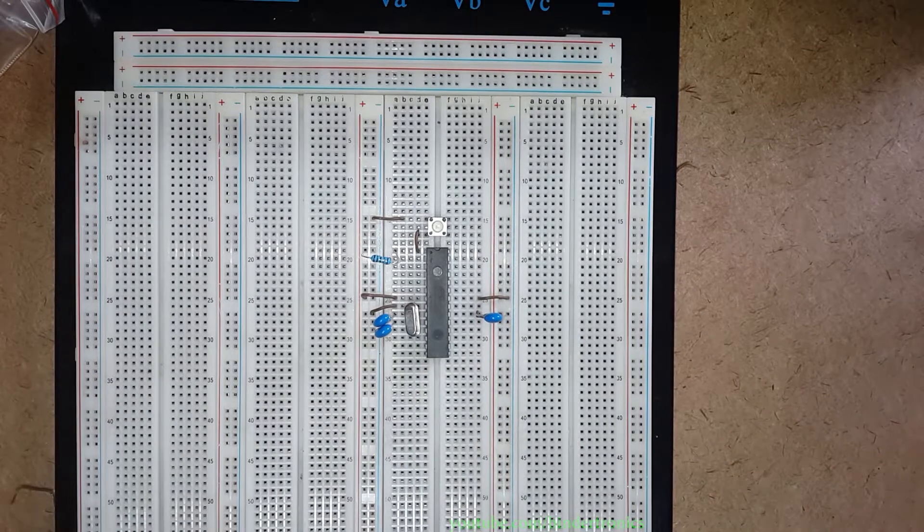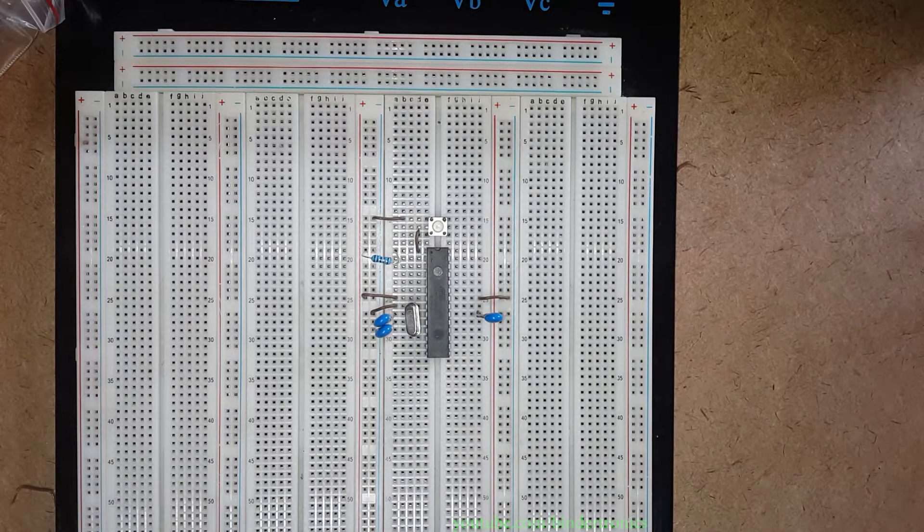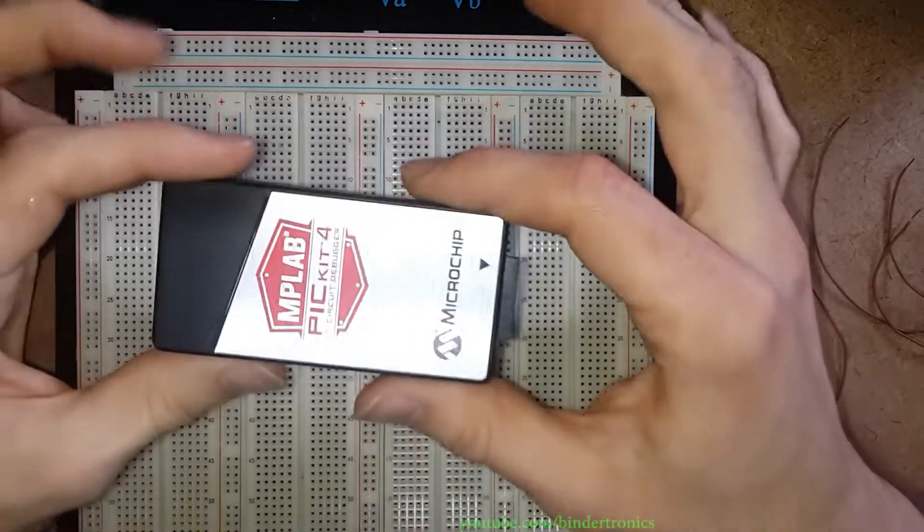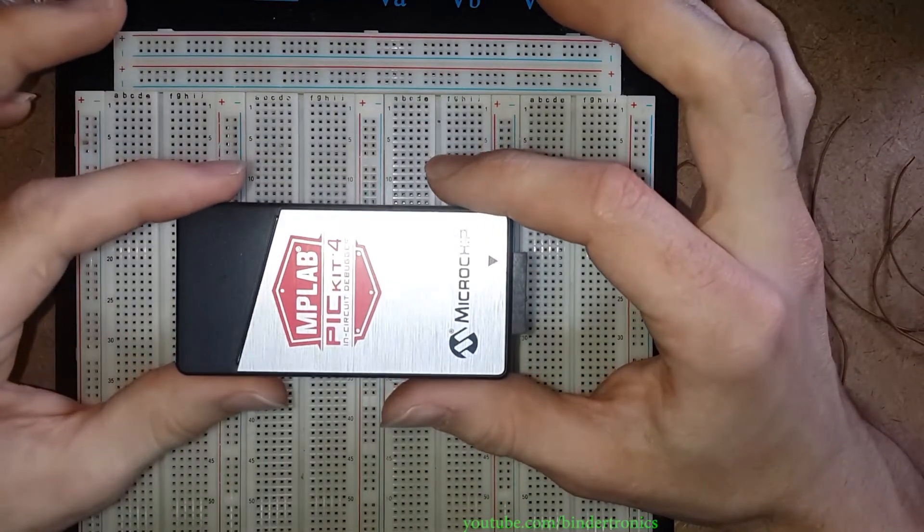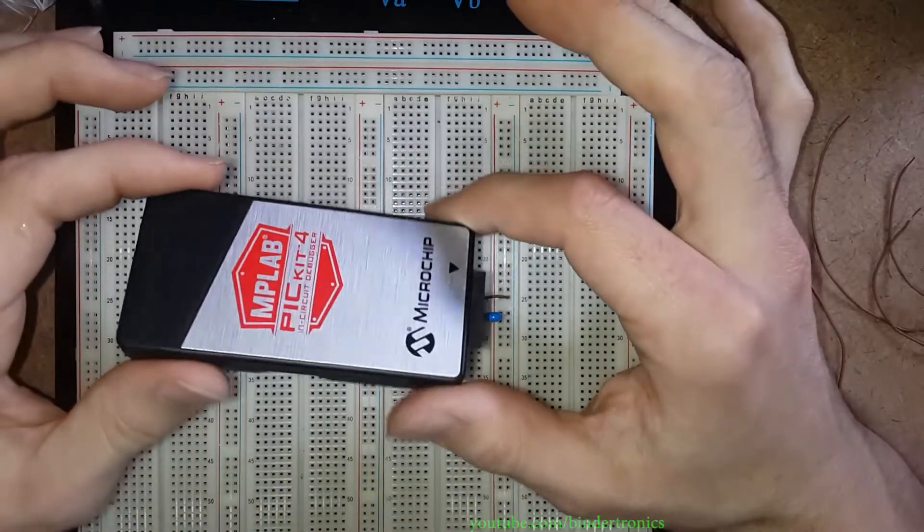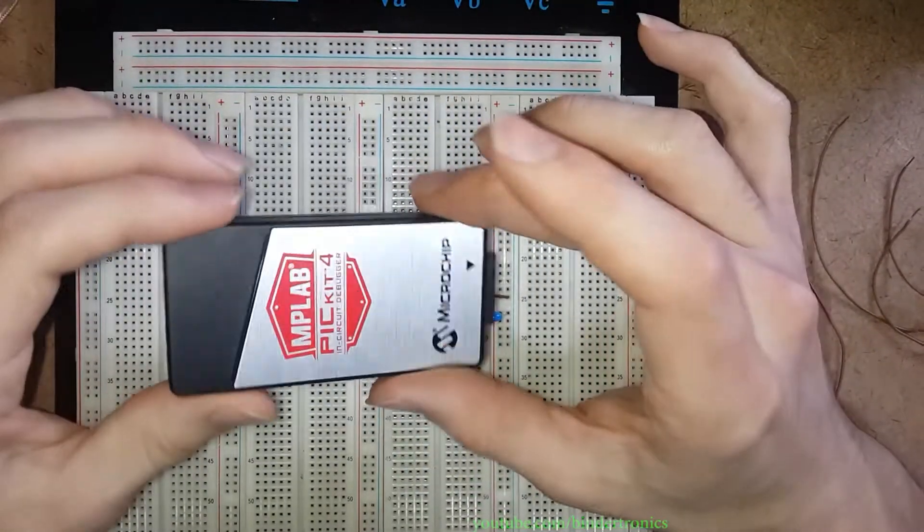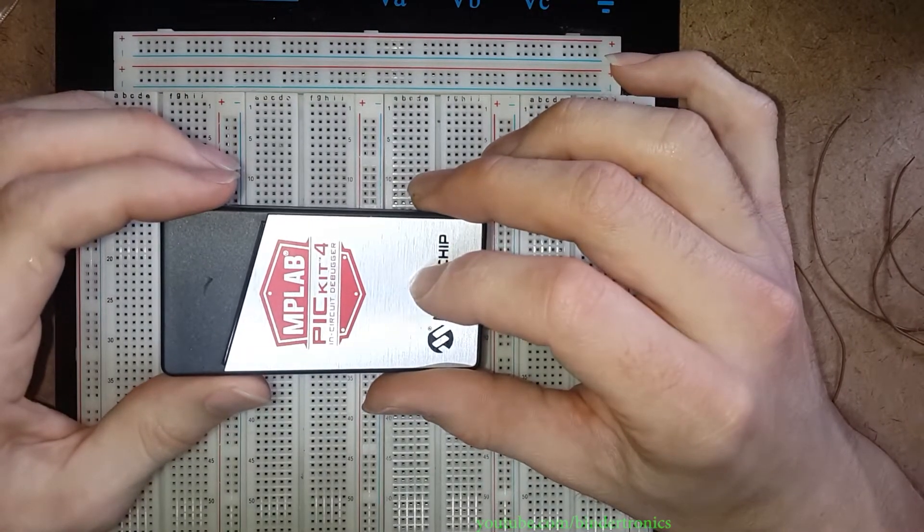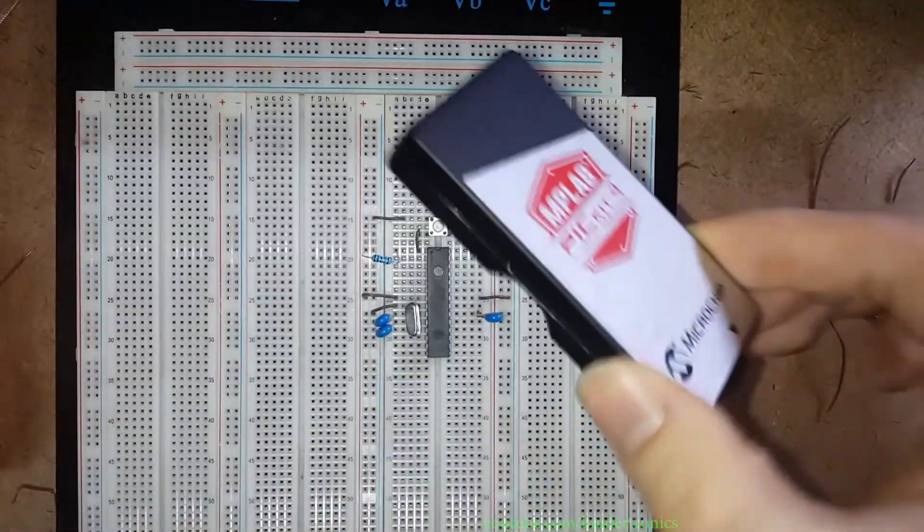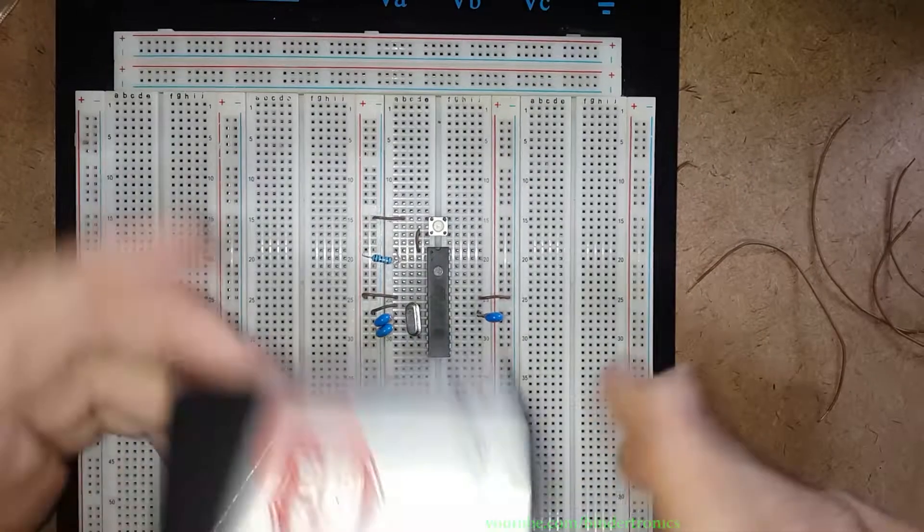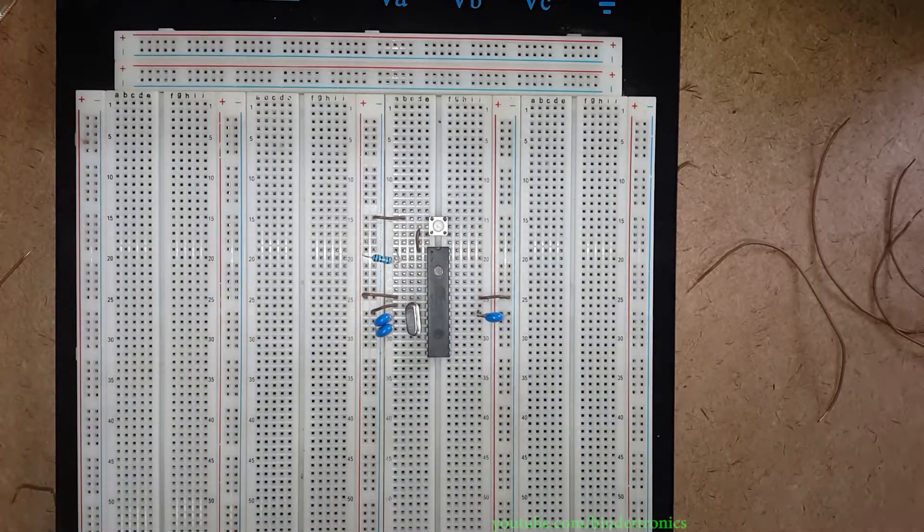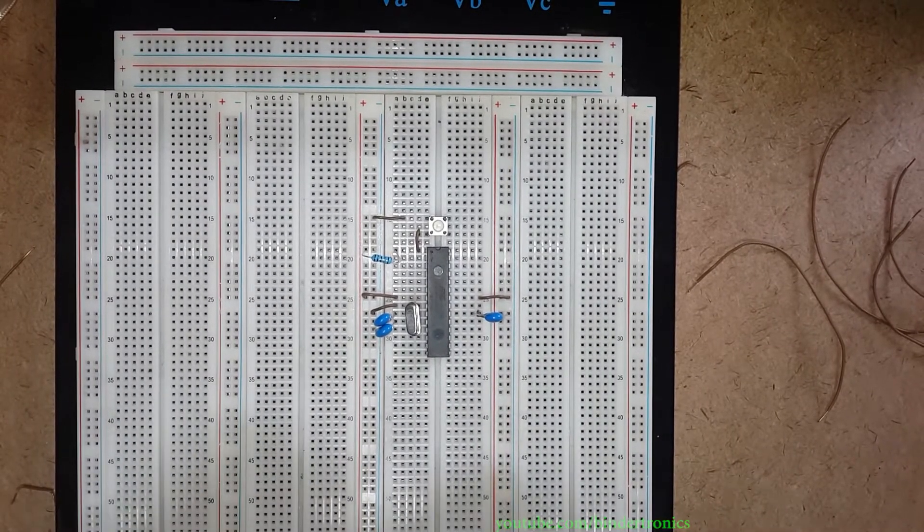Okay so now we have all the basic stuff set up. Now what needs to be added is the programming lines. Okay so now what I'm going to be using to program the device with is going to be a PICkit 4. This is basically the universal programmer now from Microchip. So it can program anything from ATtiny, ATmega to ATsam and then as well as the entire PIC range including the PIC32s. So it's basically an all-in-one solution for anything from Microchip.